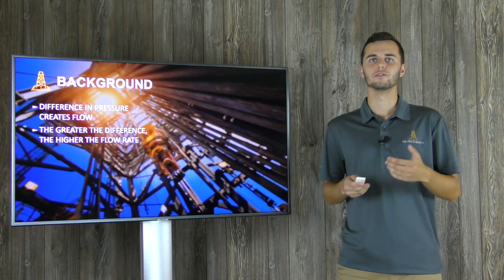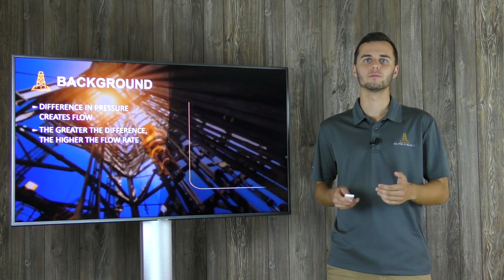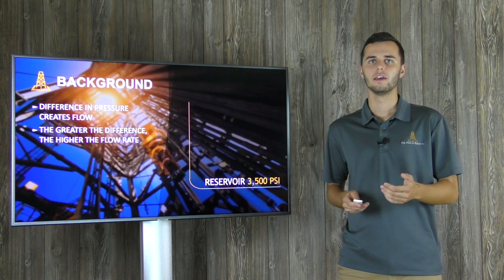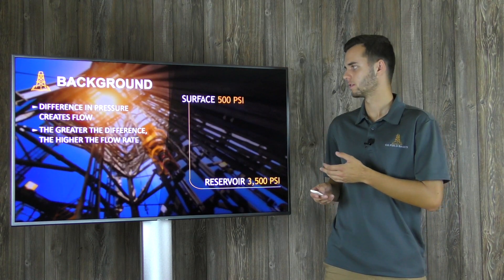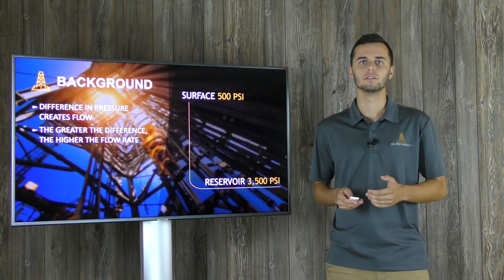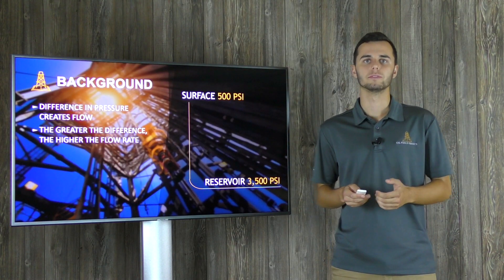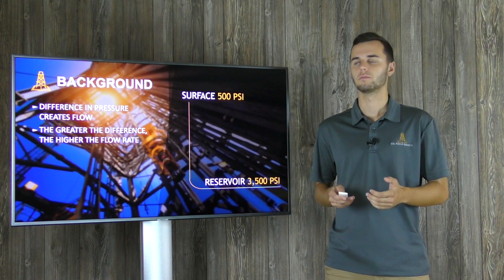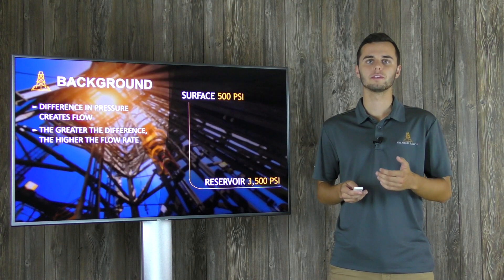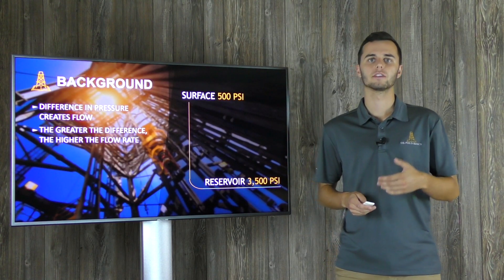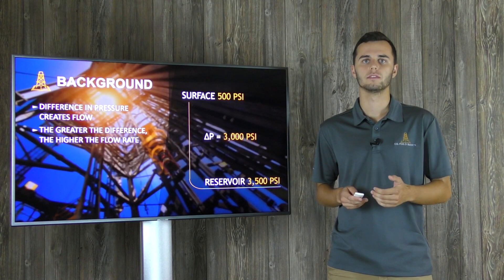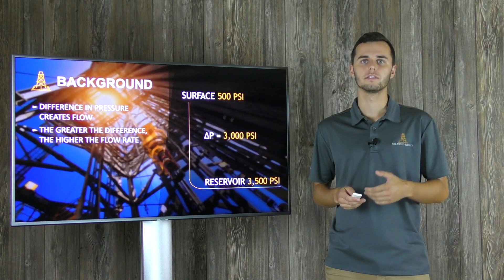Now let's transfer this knowledge over to the oil field. Wells are drilled into one or more pressurized reservoirs. The hydrocarbons will flow from the reservoir rock into the well and then up to the surface where the processing equipment will be. Any gas will be sent into a pipeline or flared. The oil and water will be stored on site in large tanks or sent into the pipeline as well. We can, to some extent, control the amount of production from a well by trying to create or maintain the target pressure difference between the reservoir and the surface equipment.